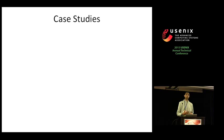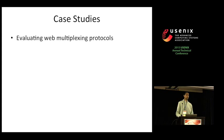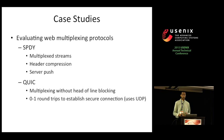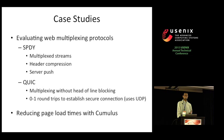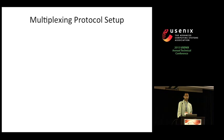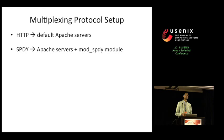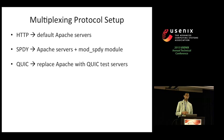Now switching to case studies using MahiMahi. First, we evaluated existing and emerging web multiplexing protocols: HTTP, SPDY, and QUIC — two multiplexing protocols proposed by Google to improve web performance. QUIC uses UDP instead of TCP to eliminate startup connection overhead. We also compared these protocols against a hypothetical optimal protocol, assuming a client makes a single request and receives the entire page's content in one RTT.